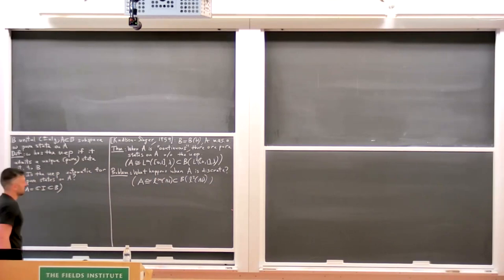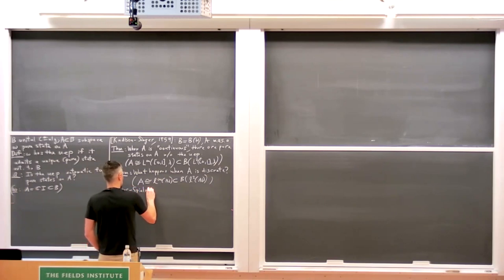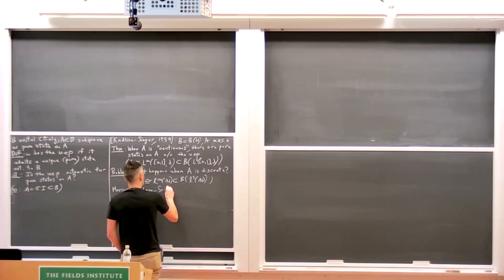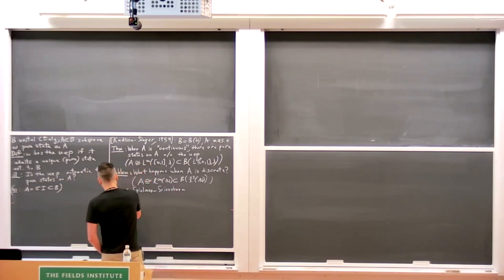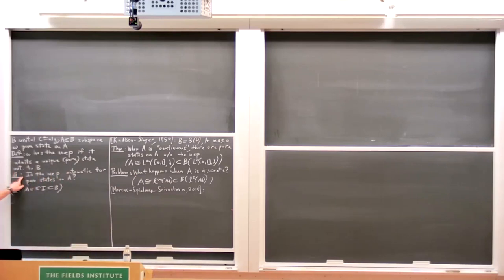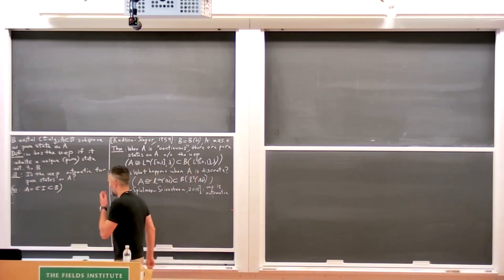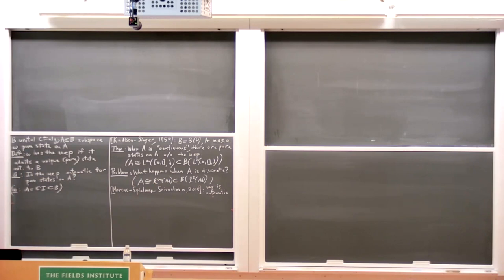They also asked what happens when A is at the other extreme from being continuous, namely when it is discrete — something like little-ℓ-infinity of the natural numbers acting on little-ℓ2. That became known as the Kadison-Singer problem. It was open for a very long time, and then in 2015 it became a theorem by Marcus, Spielman, and Srivastava, who showed the unique extension property is automatic in that case.